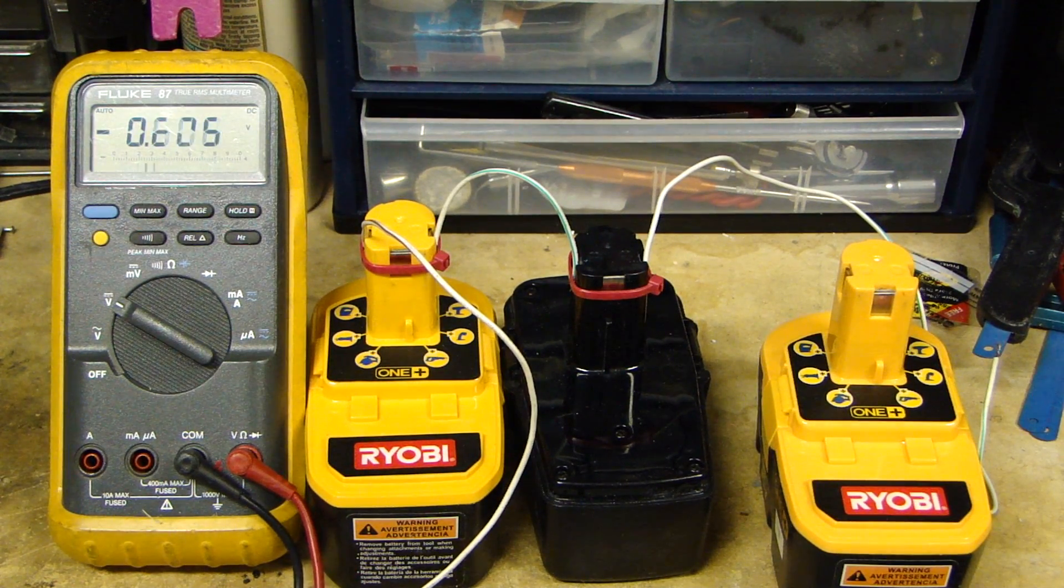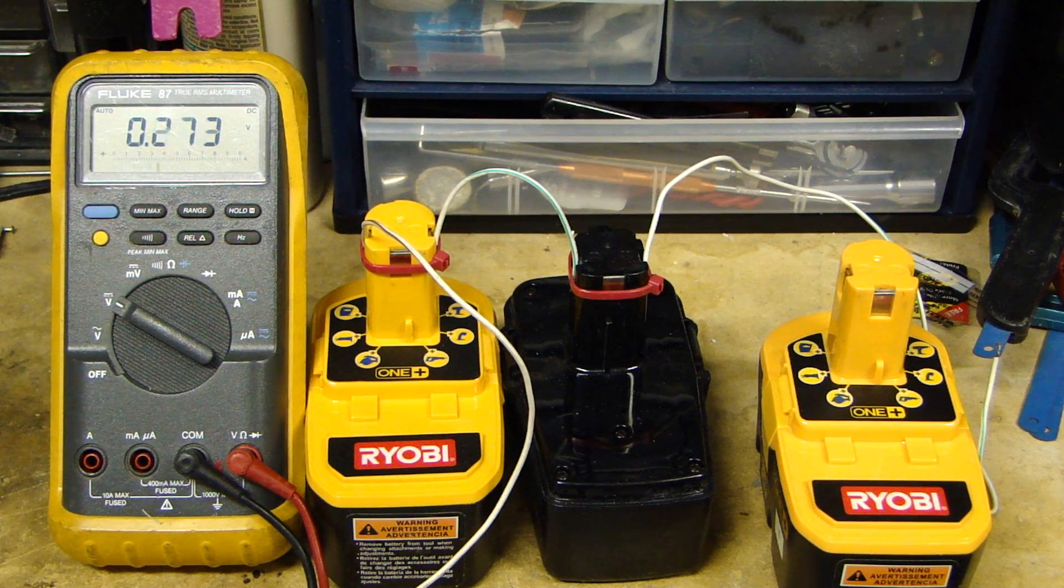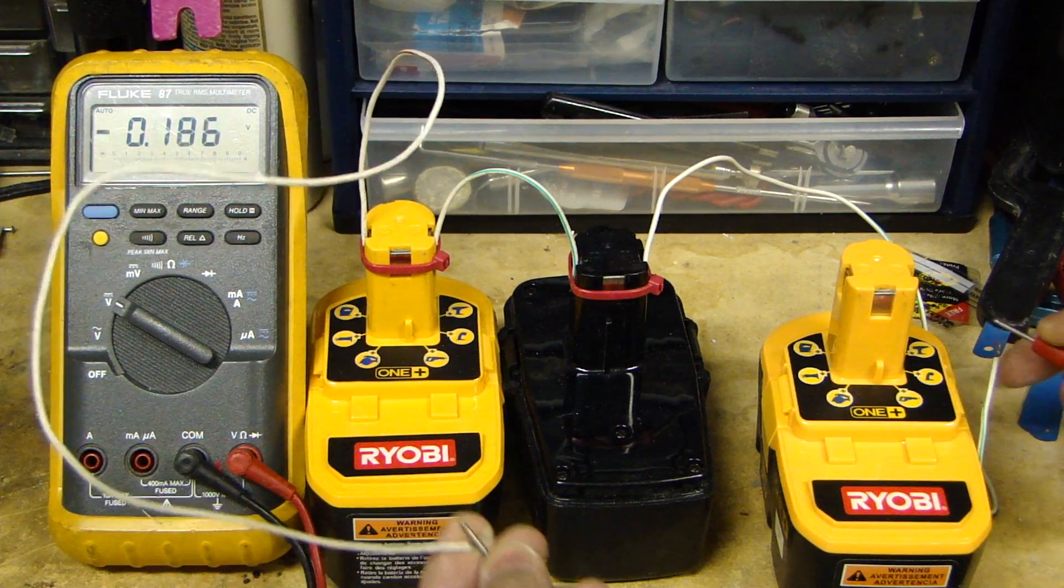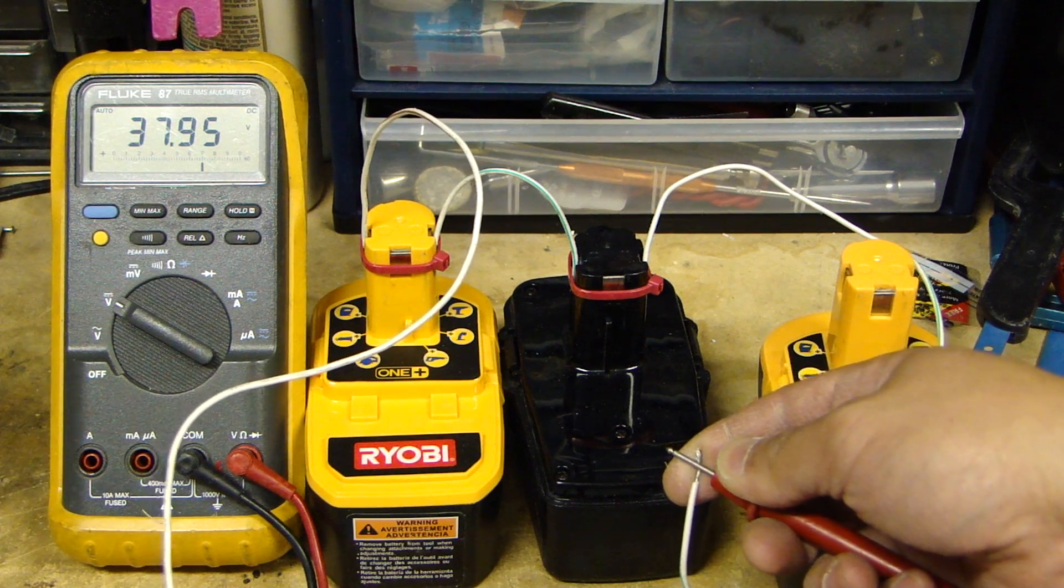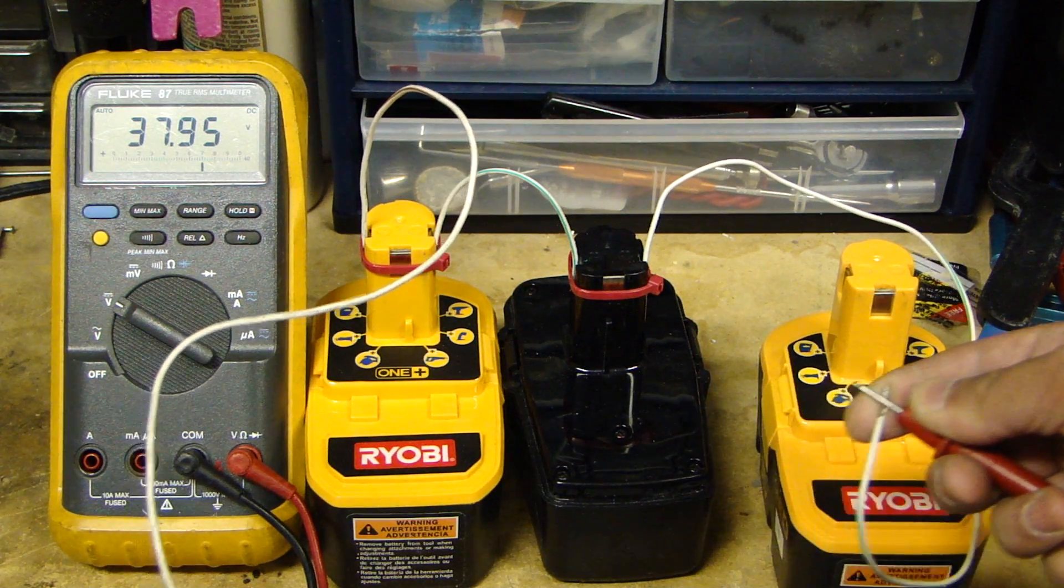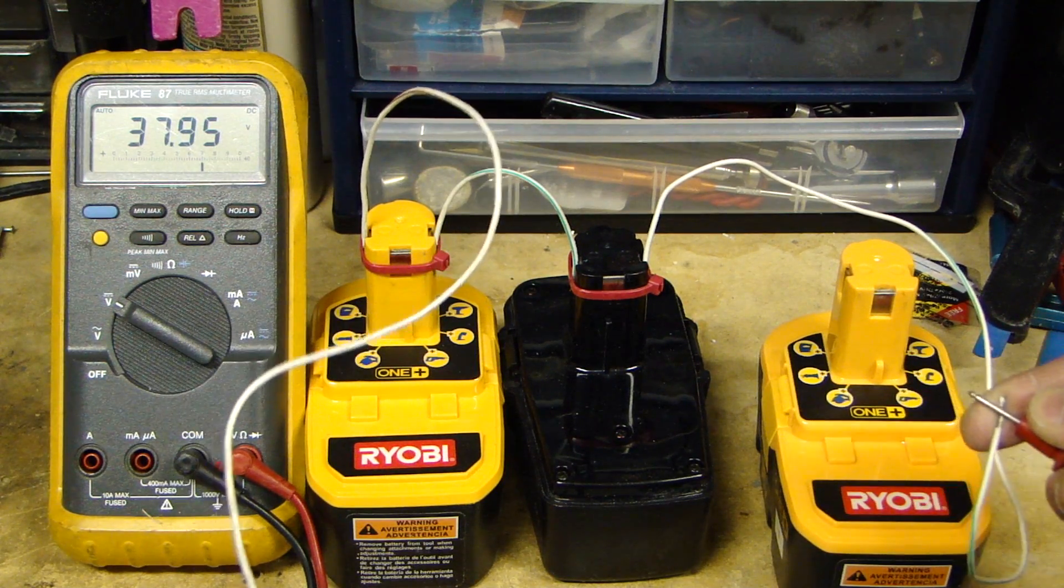If I grab my multimeter and measure the voltage, here's my negative, here's my positive. You see that is about 37.9 or 38 volts. So this is the voltage I'm using as the power source.